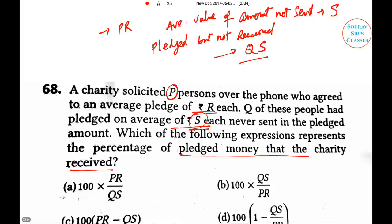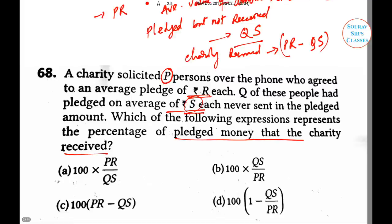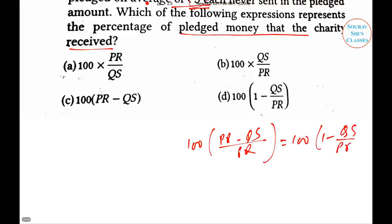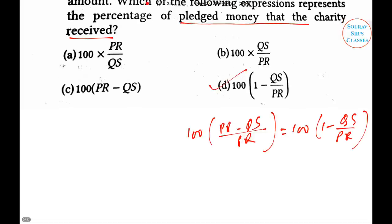With respect to the total amount pledged, the charity received p×r minus q×s. So the required percentage is 100 × (p×r − q×s) / (p×r), which simplifies to 100 × (1 − qs/pr). Hence option D is correct.